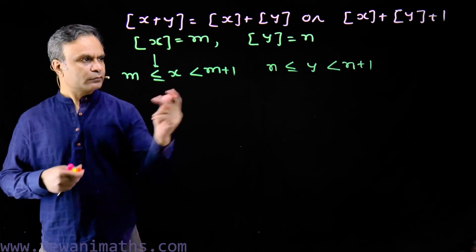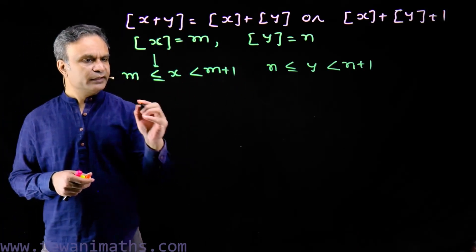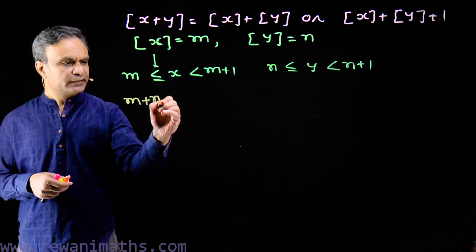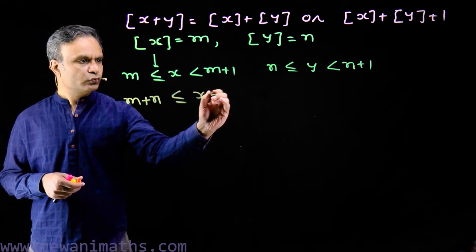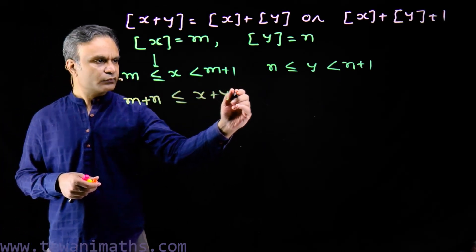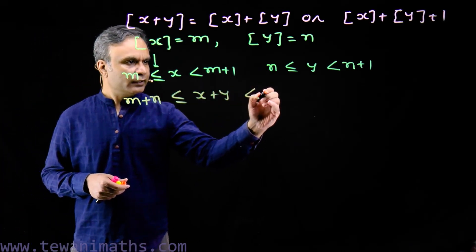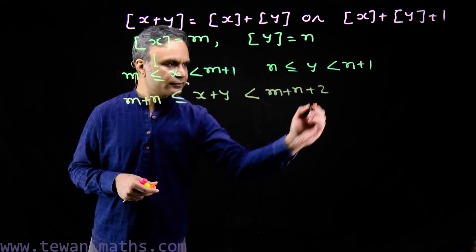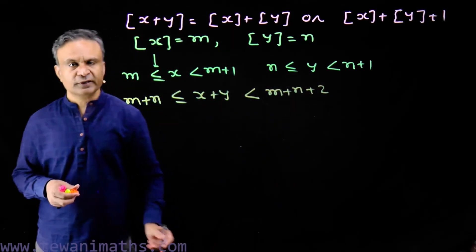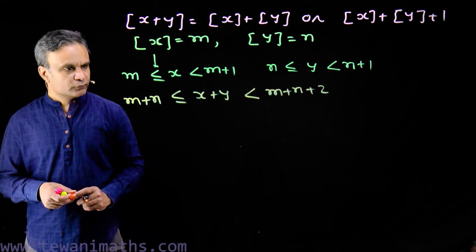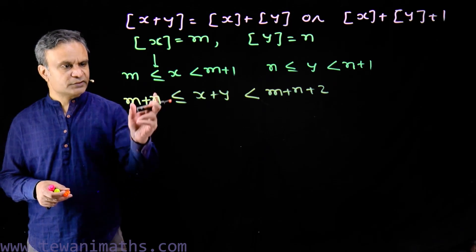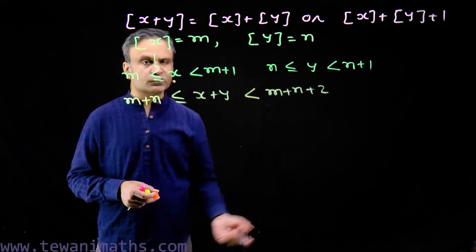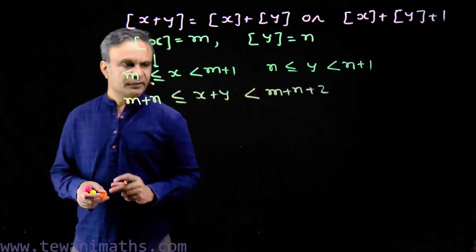Now we add these two inequalities. We get m plus n less than or equal to x plus y less than m plus n plus 2. So the value of x plus y lies between integers m plus n and m plus n plus 2, including m plus n.